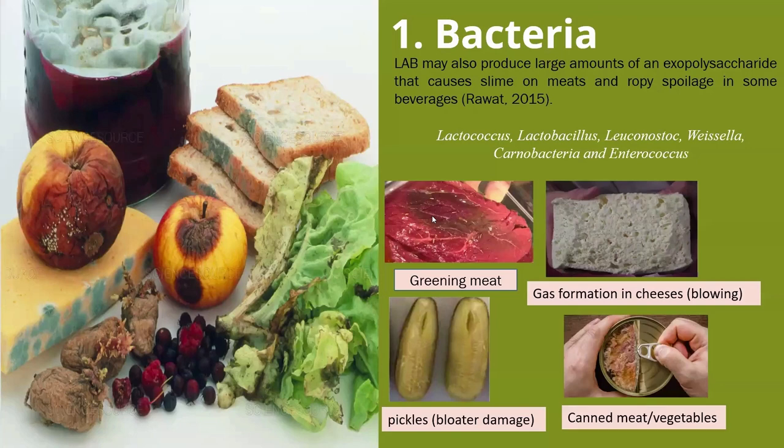Pseudomonas also contributes to a large extent to the spoilage process of food. These are predominant spoilers of food stored under aerobic refrigerated conditions, spoiling aerobically chill-stored beef, seafood, poultry, and milk.